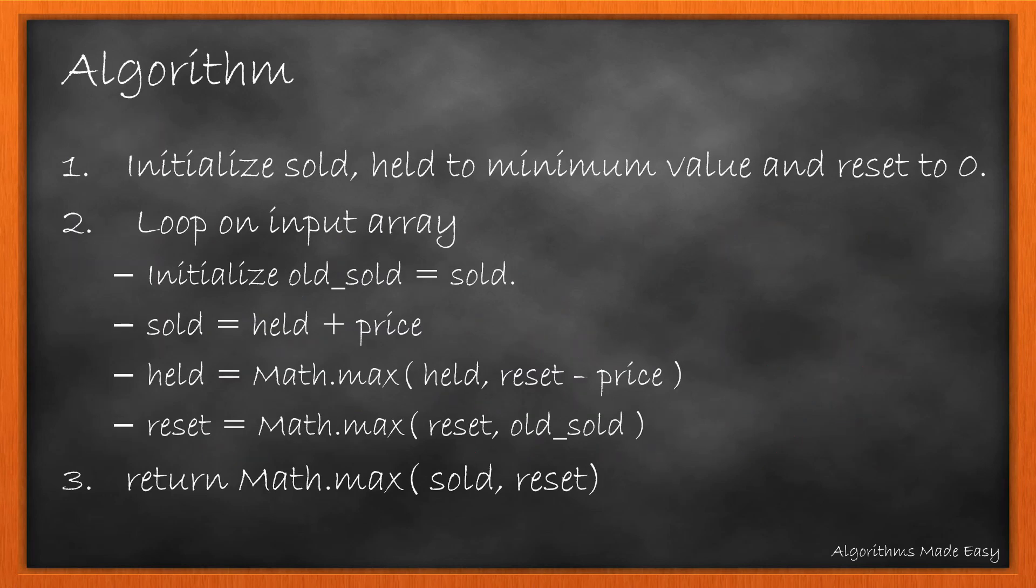Moving on to the algorithm, it is similar to what all we have discussed till now. We will have three variables depicting three states with sold and held initialized to minimum value and reset to 0. Now we loop on the array and for each value update the state. At the end we return the max of sold and reset state.